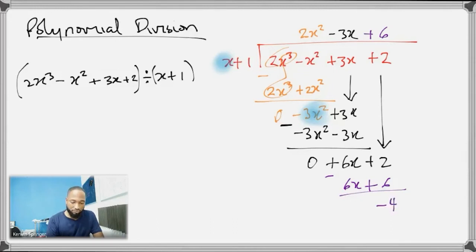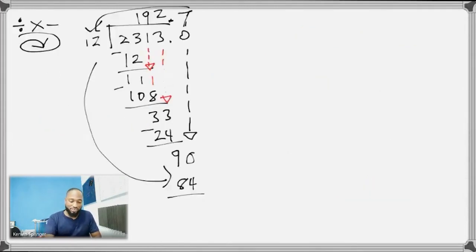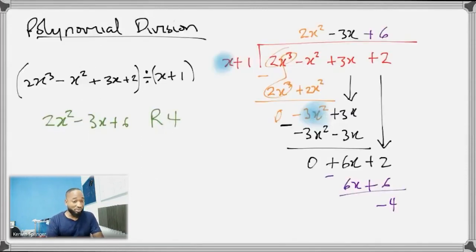So -4 is the remainder. So the answer is going to be 2x² - 3x + 6 remainder 4. So remember in primary school when you're doing the long division, you just write the remainder. Or sometimes you may see it like this: 4 over x + 1.